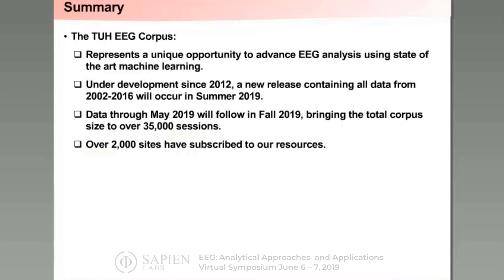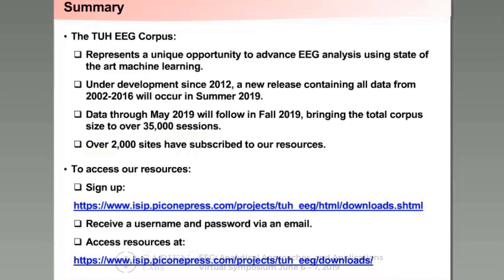This project began in 2012. We've been distributing data for several years and now have over 2,000 users subscribed to these resources, forming a pretty large community doing research on this data. We hope to release most of the data we have in hand through summer 2019. Version 1 had data through 2015; version 1.2, which we should release by end of summer, will have data through 2016. We're trying to release each year's data within about six months after the close of that year.